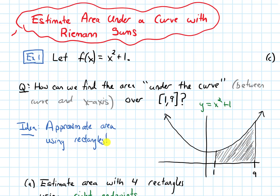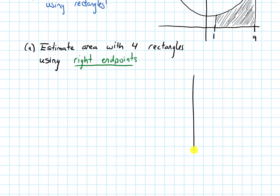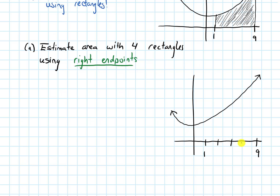We're going to approximate the area using rectangles. Let's get to Part A: we'll estimate the area with four rectangles using right endpoints. I'll draw a picture of the parabola, focusing on the first quadrant, and label the endpoints at 1 and 9. I need to split the interval into four pieces. When we use the right endpoint, in each subinterval I start at the right endpoint, draw vertically until I hit the curve — that's how tall my rectangle is — then make a horizontal line across and draw down to complete it.